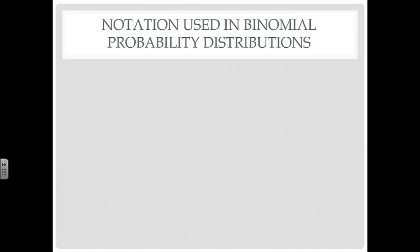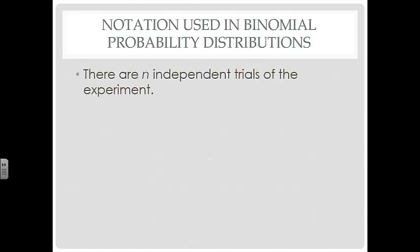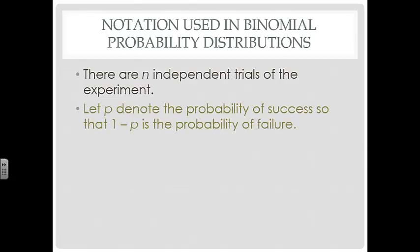Now let's take a look at some notation. N is the number of independent trials of the experiment. P is the probability of success, and remember that our probabilities have to add up to one, so the probability of failure is one minus P. These are called binomial probability distributions because there are only two outcomes — success or failure. Bi means two, so binomial means two outcomes.